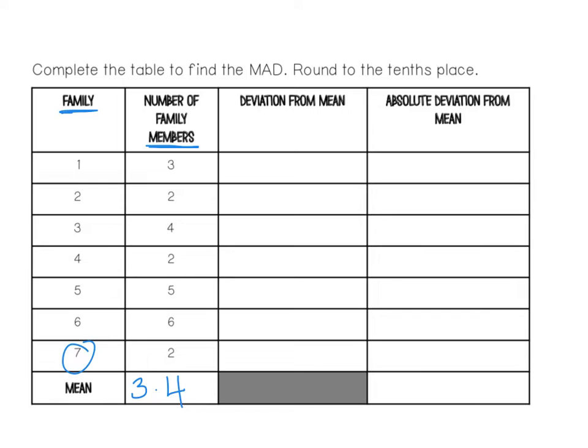Now we need to figure out the deviation from the mean — deviation just means how far off you are. So we're going to take each one of these numbers in the second column and subtract the mean from it.